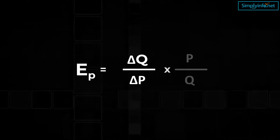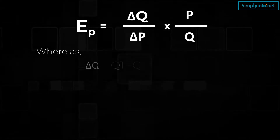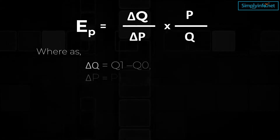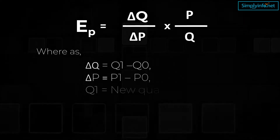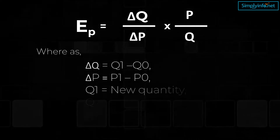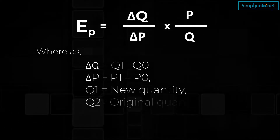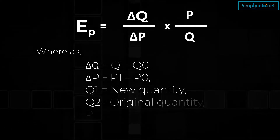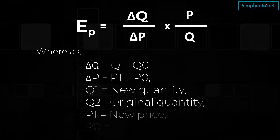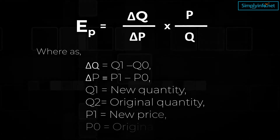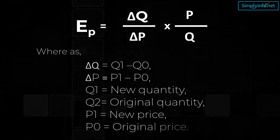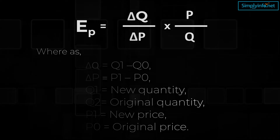Numerically, Ep = (ΔQ / ΔP) × (P / Q), where ΔQ = Q1 minus Q0, ΔP = P1 minus P0, Q1 is the new quantity, Q0 is the original quantity, P1 is the new price, and P0 is the original price.